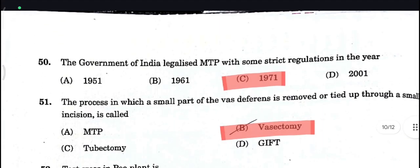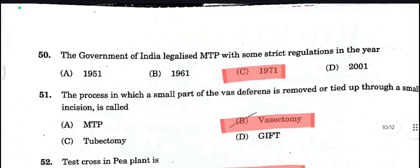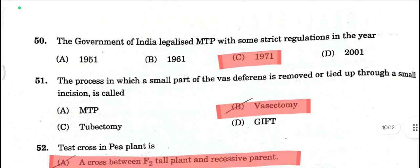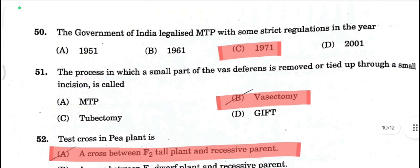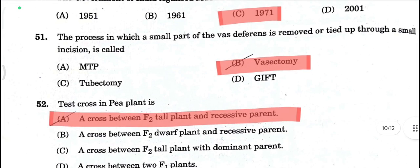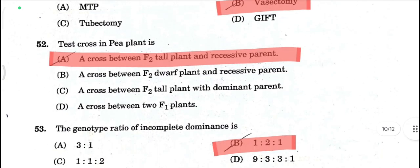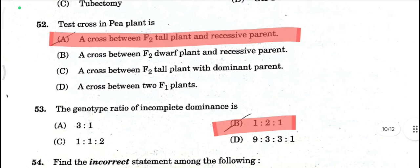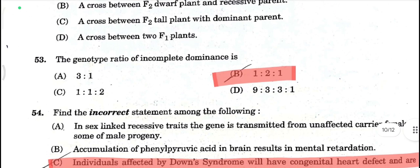The Government of India legalized MTP with some strict regulations in the year 1971 — that is your correct answer. Next, vasectomy is your correct answer. Next, test cross in pea plant is a cross between F2 plant and recessive plant — A is your correct answer here.